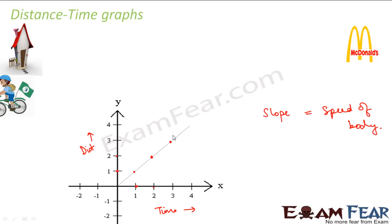The slope of a straight line is given by tan θ.